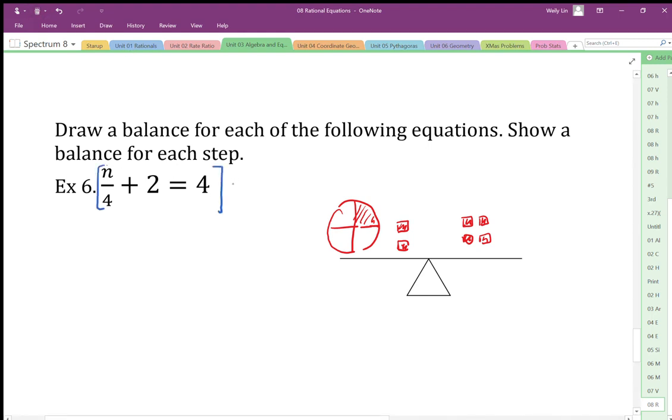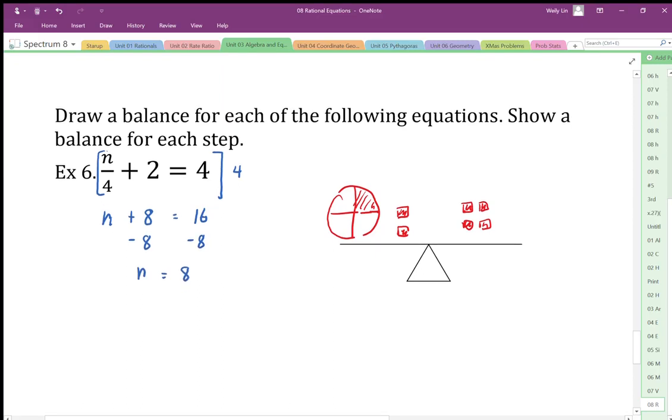Okay, I'm going to times by 4. So times 4, divide 4, undo each other. Okay, this is going to be equal to 16. When I do minus 8, minus 8. Yeah, I end up with n equals 8 is what I kind of predicted when we looked at the balance.